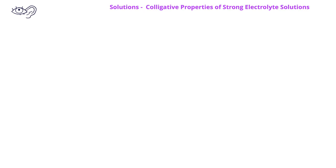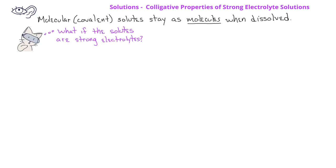In all of our colligative property videos so far, we've only used solutes that have been molecular or covalent compounds. We know that molecular or covalent solutes stay together as molecules when they're dissolved in water. But what happens when the solutes are strong electrolytes? You should recall from previous courses that strong electrolytes completely dissociate in water.